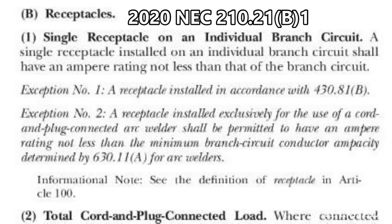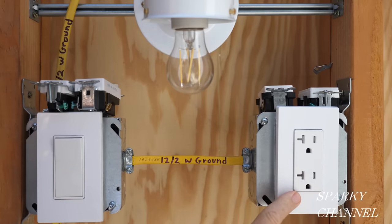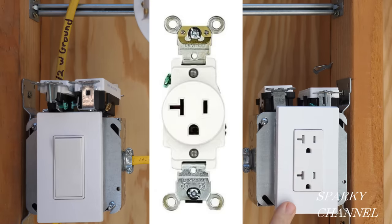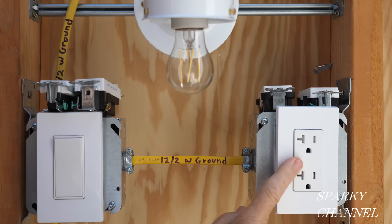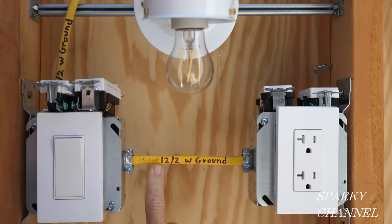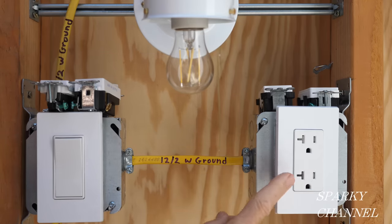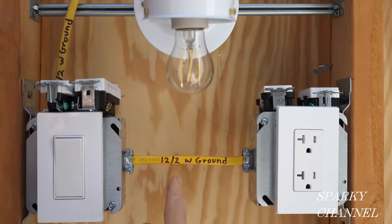NEC 2020 section 210.21B1 covers a single receptacle on an individual branch circuit. This is a duplex receptacle — a single receptacle has just one outlet. A single receptacle installed on an individual branch circuit shall have an ampere rating not less than that of the branch circuit. So if I put a single receptacle on a 20 amp circuit with 12-2 with ground, I have to use a 20 amp single receptacle.